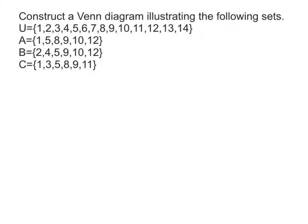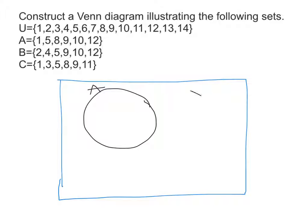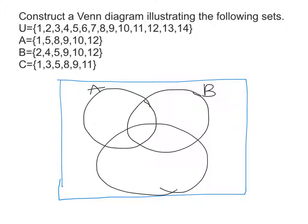Let's look at an example just to make sure we've got an idea of what's going on here. We're going to construct a Venn diagram, and they've given us the universal set, Set A, B, and C. So you're going to start with your universal rectangle, and then since you have three sets, you're going to have three circles — A, B, and C.